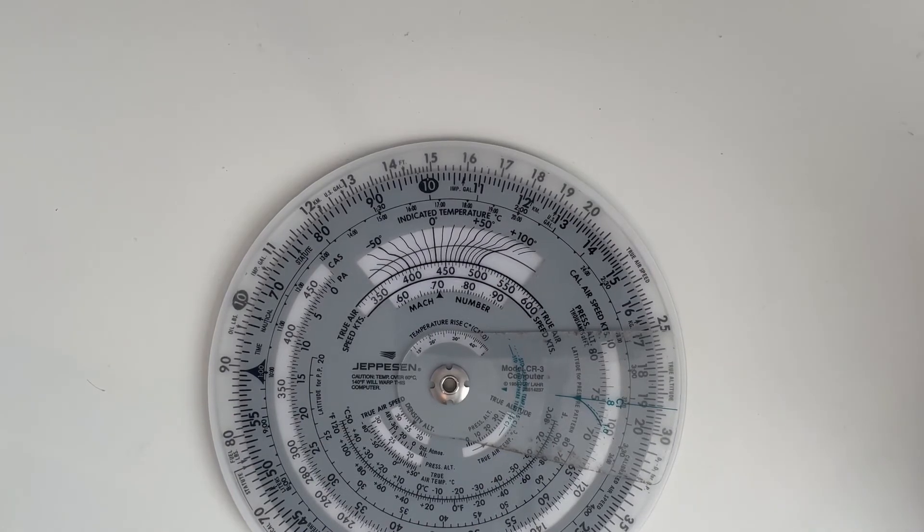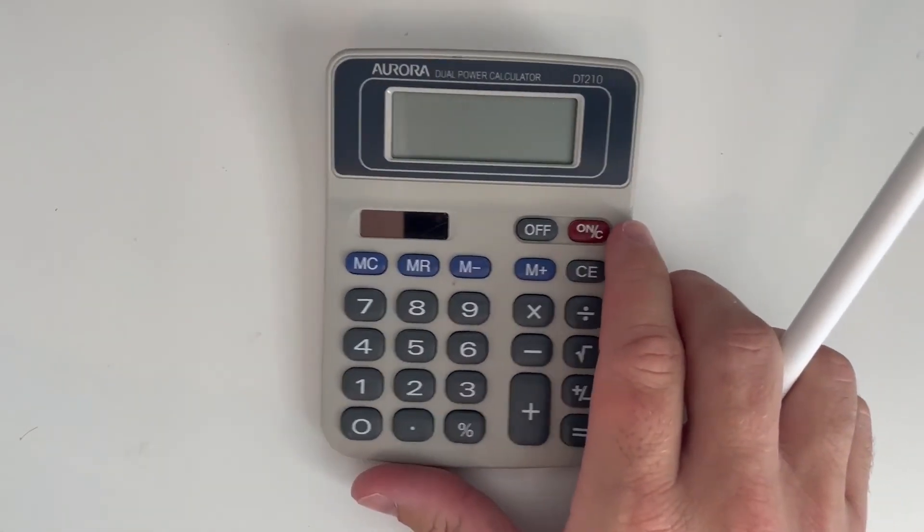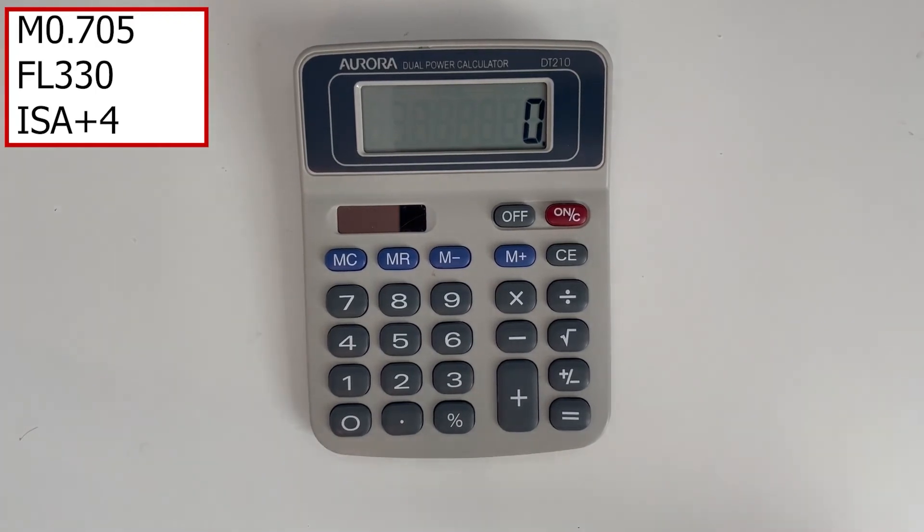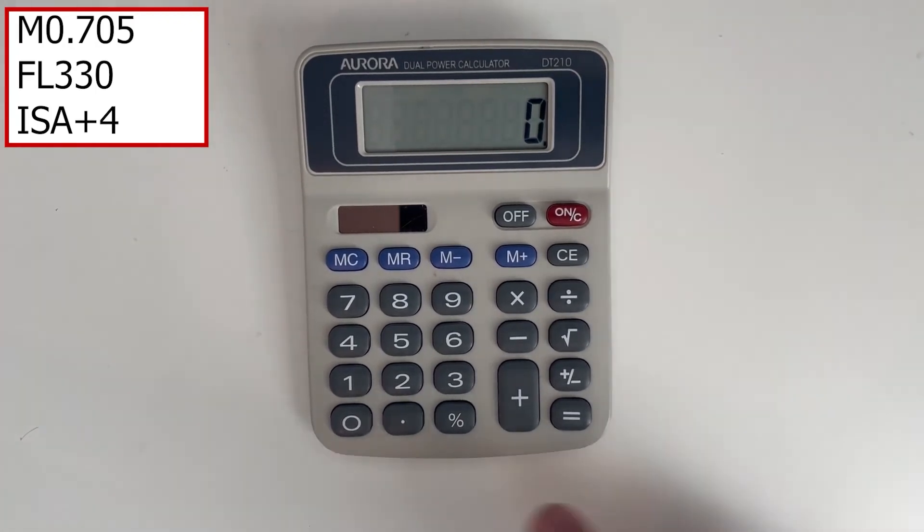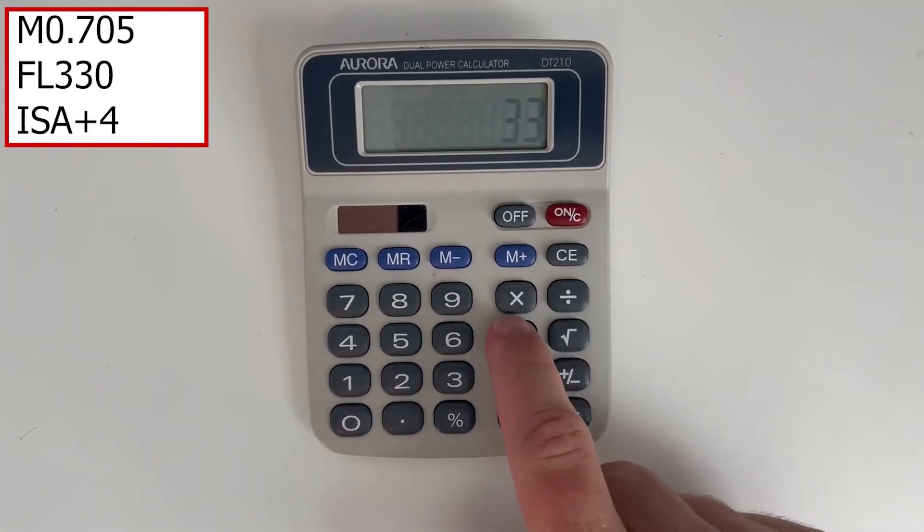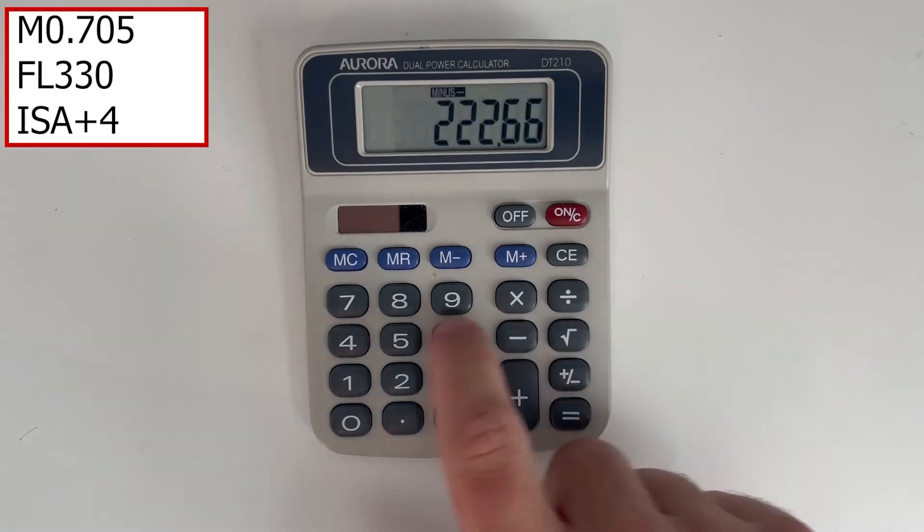Now that we know the Mach number, we're going to be working out the TAS using the calculator method. So it's dead simple. It's what you've been doing already. 1.98 times the flight level 33 minus 288. It's an ISA deviation of plus 4, so we're going to be subtracting 4.